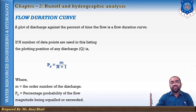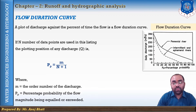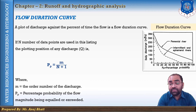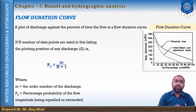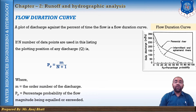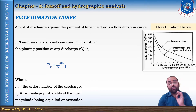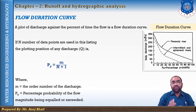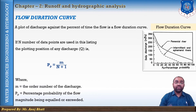Looking at the flow duration curve, the plot shows discharge Q against the percentage probability P. The flow duration curve represents the distribution of cumulative frequency and can be considered to represent the stream flow variation of an average year. The ordinate qp at any percentage probability represents the flow magnitude in an average year that can be expected to be equal to or exceeded. The percentage of time is termed Pp percent.